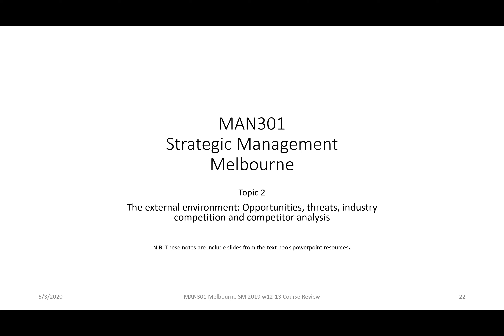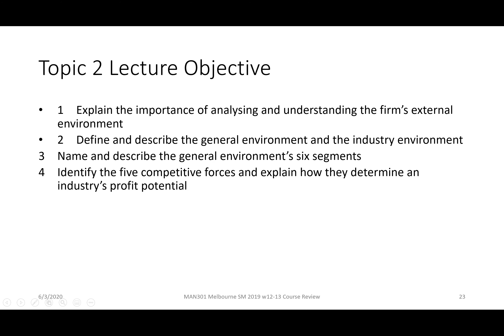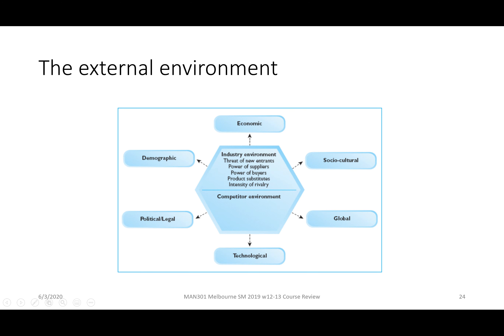Our objectives for this topic were: to explain the importance of analyzing and understanding the firm's external environment; to define and describe the general environment and the industry environment; to name the six segments of the general environment; and to identify the five competitive forces and explain how they determine an industry's profit potential.